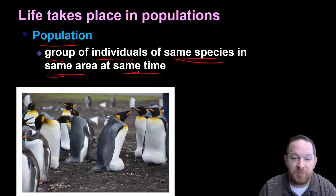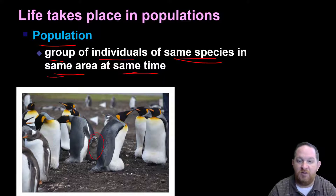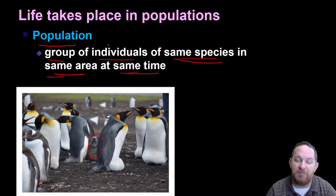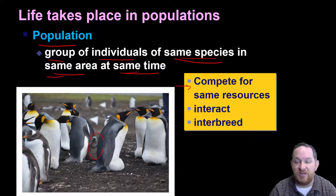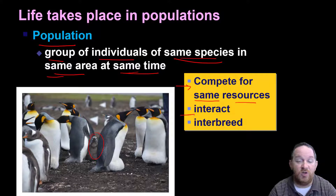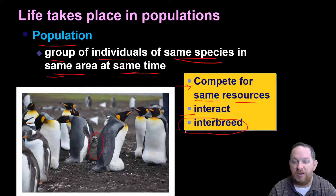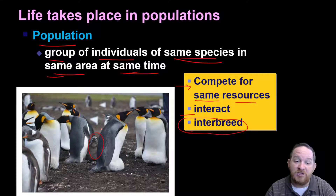Here's a population of penguins — we see even a baby penguin there. And the thing about populations is that some interesting things take place. Life takes place in populations. In these populations, because they're in the same space at the same time, they're often competing for the same resources. Populations also will interact with one another. And then, maybe most importantly, interbreed — so the population of penguins will interbreed so that they can continue to pass genes into the next generation.